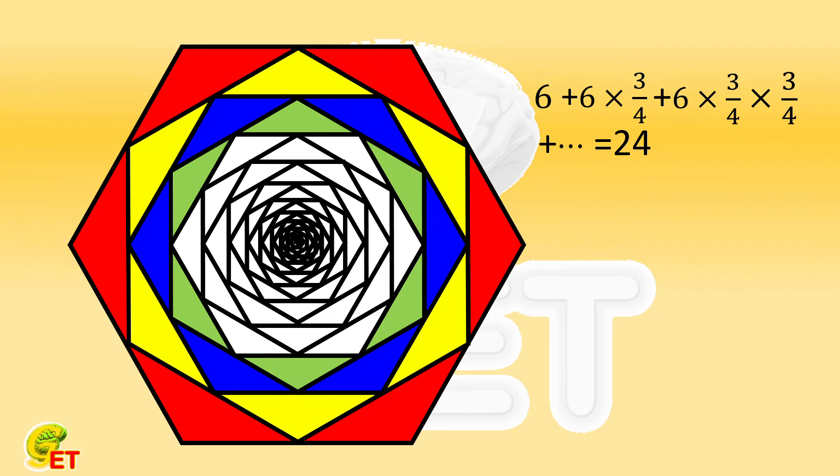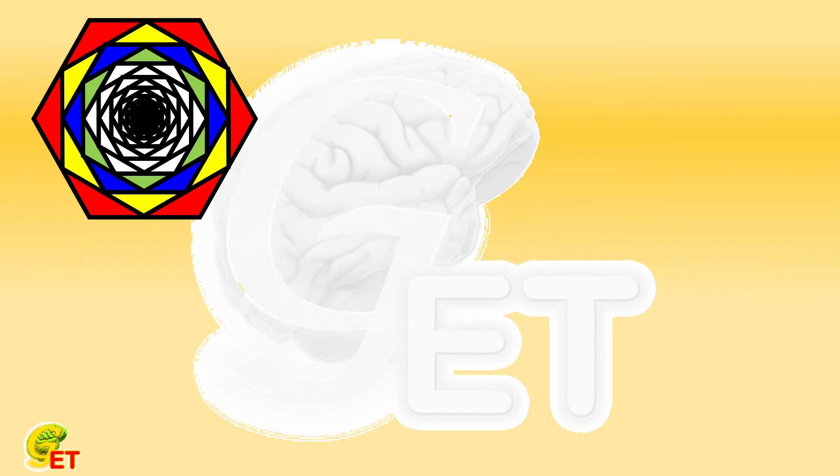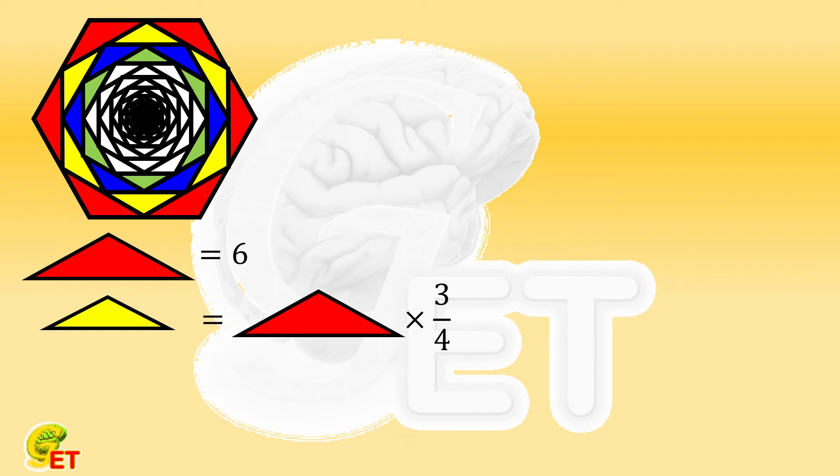However, if we want to think about the exercise as a problem of summing an infinite geometric series, we need to redefine the conditions known and unknown. Now what is known should be that the total area of the 6 red triangles is 6. The total area of the yellow triangles is that of the red ones times the common ratio 3 over 4, and the total area of the blue triangles is that of the red ones times 3 over 4 for twice, or that of the yellow ones times 3 over 4, and so on.